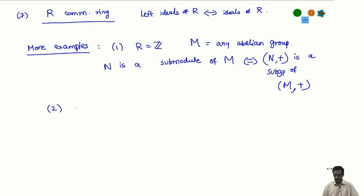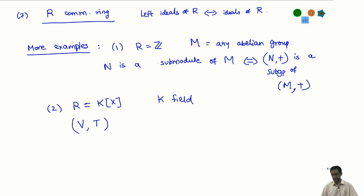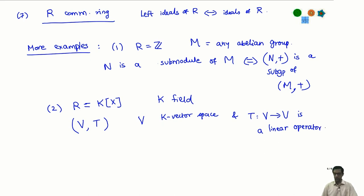Example 2, which is slightly less trivial: take K to be a field and R to be the polynomial ring K[x]. Recall from an earlier lecture how to construct modules over K[x]: you start with a pair (V, T), where V is a K-vector space and T: V → V is a linear operator. These two things uniquely define a K[x]-module structure on V.